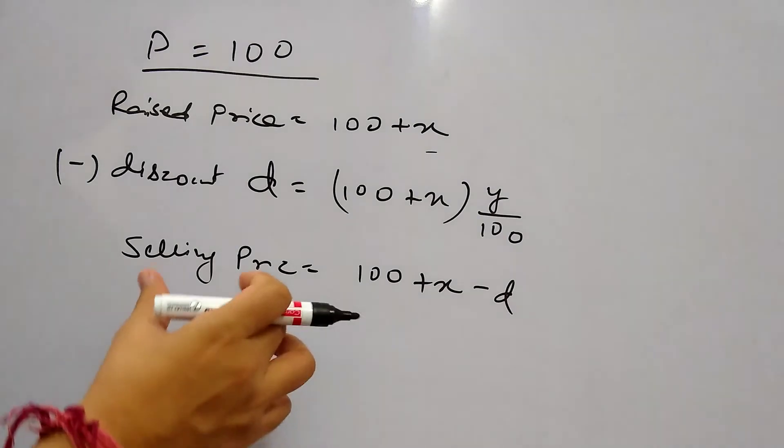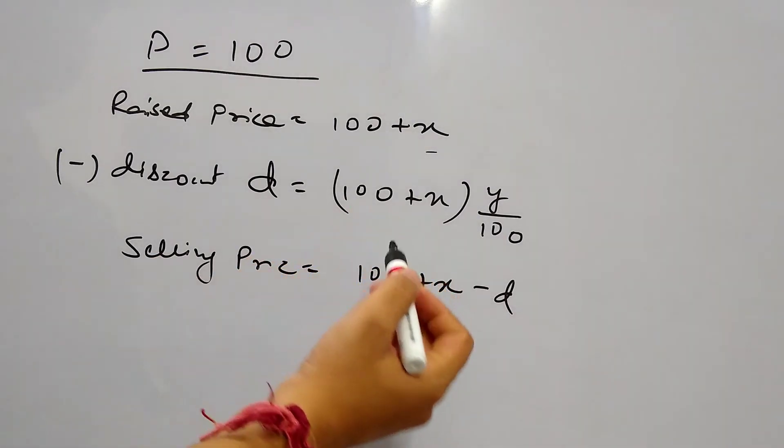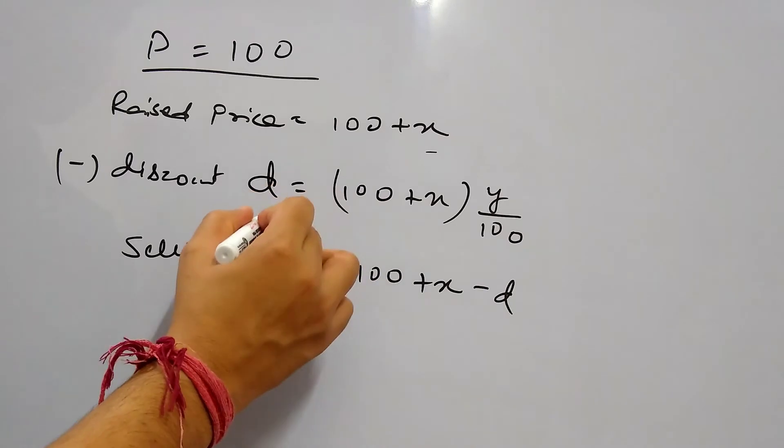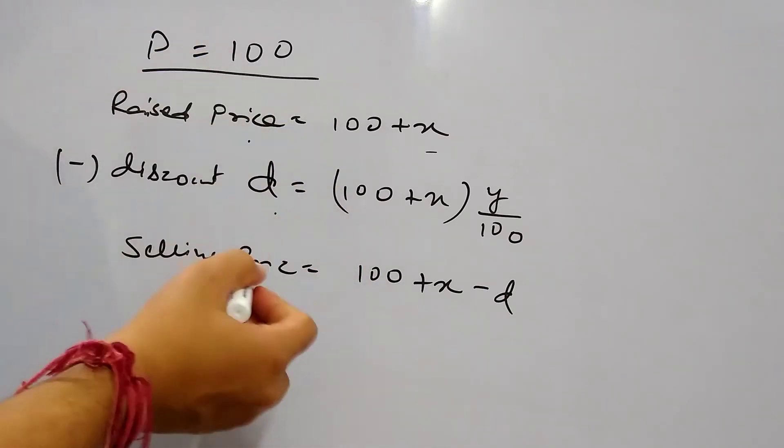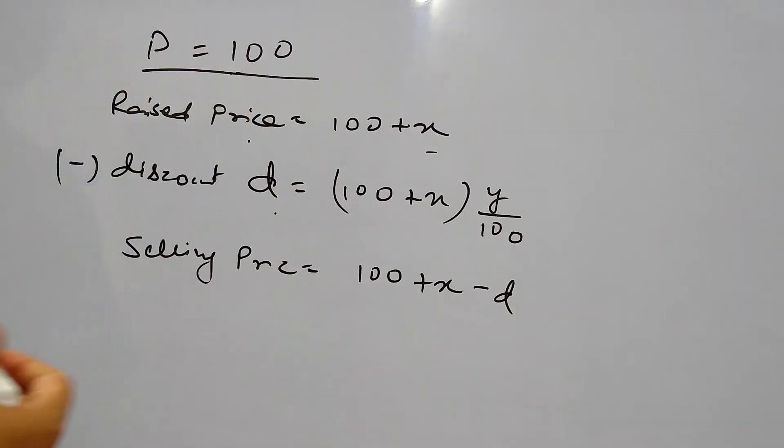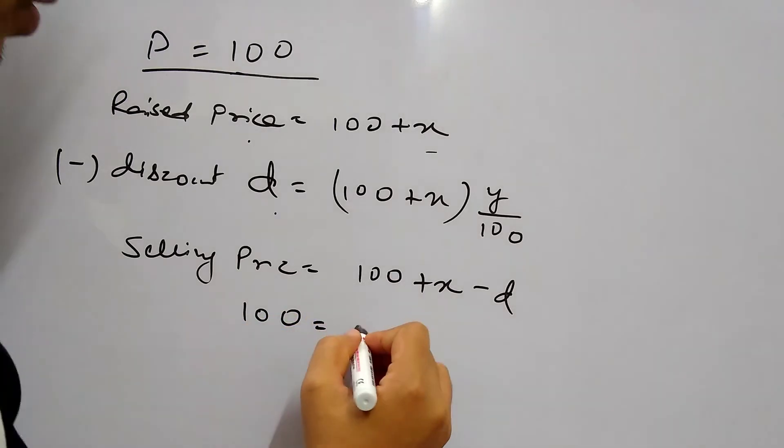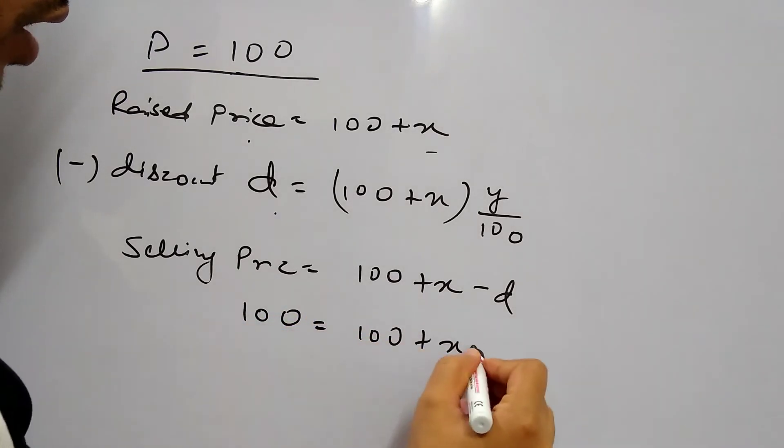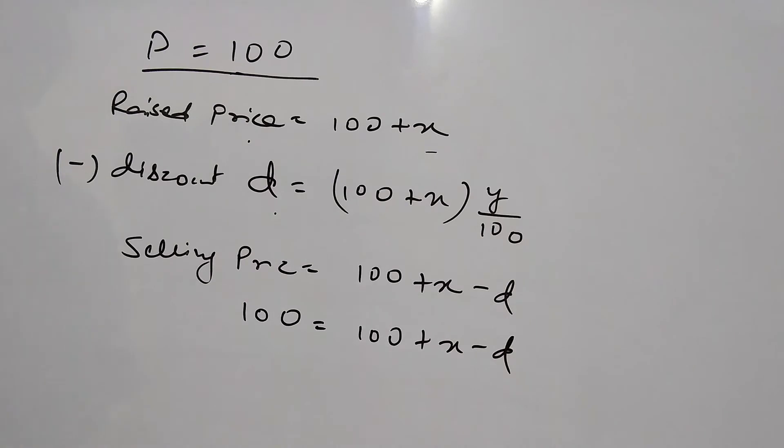So it is given in the question that this selling price after applying discount on the raised price again becomes equal to the original price. So this selling price is 100 plus X minus D. So this 100 will get cancelled out. So X equals to D.